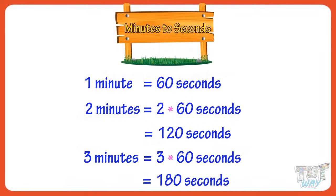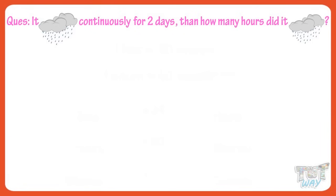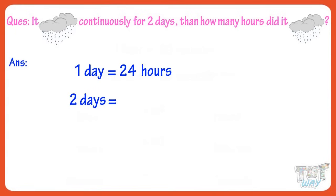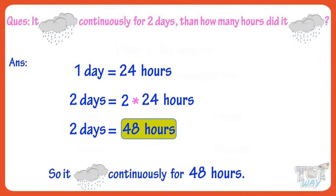Now let's solve a few questions based on what we learned. One day equals 24 hours. Two days equals 2 multiplied by 24, equals 48 hours. So it rained continuously for 48 hours.